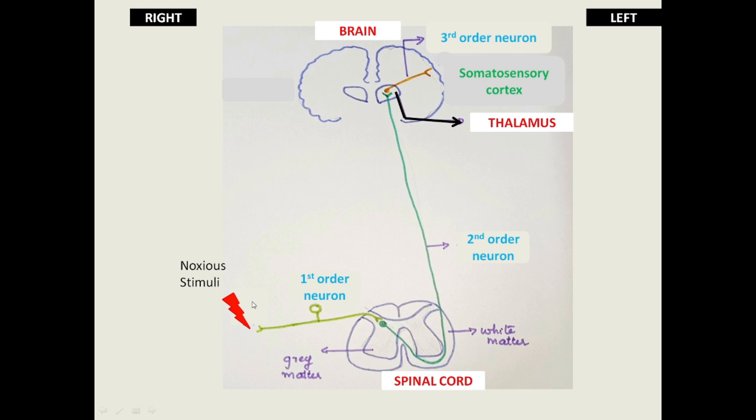The pain pathway. Following a noxious stimuli, impulses are carried via the first-order neuron or the primary efferent neuron. This neuron is a pseudo-unipolar neuron with a cell body located in the dorsal root. This splits up into two axons. One of the axons extends into the periphery and the other one terminates in the dorsal horn of the spinal cord.